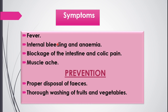The symptoms of Ascariasis include fever, and since the juvenile form passes from the intestine into the bloodstream, there is a chance of internal bleeding leading to anemia. There is also blockage of the intestine and colic pain, as a large number of worms may reside in the intestine. Muscle ache is also a symptom.